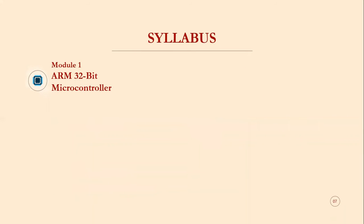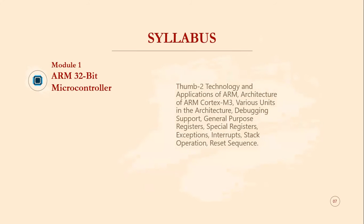Module 1 covers the ARM 32-bit microcontroller. Topics include Thumb-2 technology, applications of ARM architecture, the various units in the ARM Cortex-M3 architecture, debugging support, general-purpose registers, special registers, exceptions, functions, interrupt stack operation, and reset sequence.